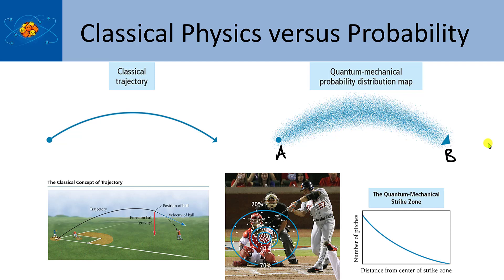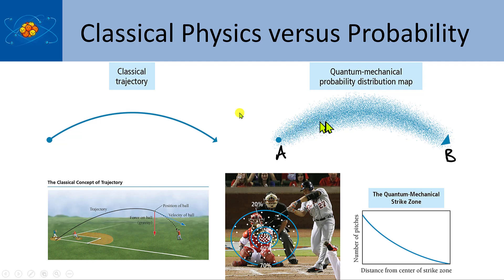I've backed us up to this slide to remind you of some things we've talked about. When we talk about trajectories of electrons or where electrons are in atoms, we've come to the idea that electrons, because they have wave properties, can't be described by a standard classical trajectory where everything is known about the object. Instead we come to something called probability distribution maps. What does this look like when we use this idea in combination with Schrödinger's wave equations?